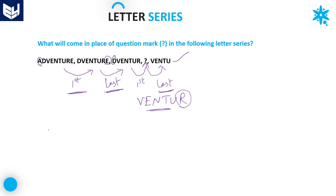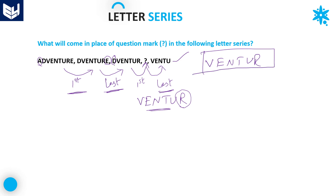So the pattern is: initially eliminate the first letter, then the last letter, then again the first letter, then the last letter. From the third term we eliminate the first letter, so the answer becomes V-E-N-T-U-R. That is the answer for this question. I hope you enjoyed the session. Thank you very much for watching.